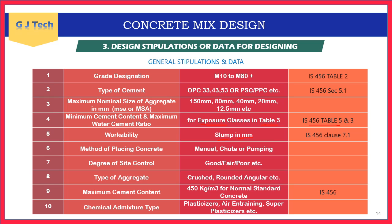Method of placing concrete — manual, shoot, or pumping — affects certain variables. Degree of site control is classified as good, fair, or poor, based on quality maintained during casting. Type of aggregates (crushed or rounded) must be specified to confirm angularity. Maximum cement content per IS 456 is 450 kg/m³ for OPC.